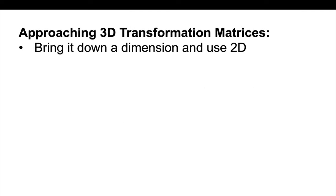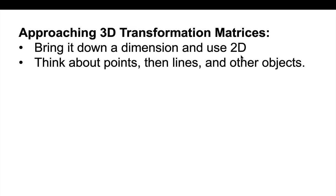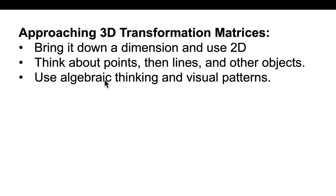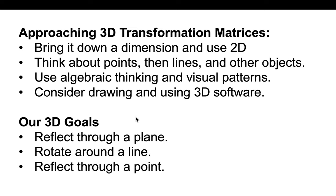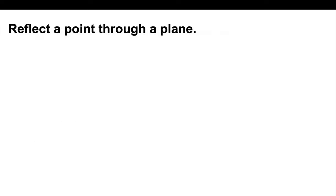When you're working in 3D and get stuck, bring it down a dimension — 2D has a lot to offer. If you're trying to move something complicated like a line or a shape, step back and simplify: try to move a point through a transformation first, then build up lines and other objects. Don't be afraid to generalize from algebraic thinking and simple patterns. If you know something about 2D, look at the pattern and try to bring it up to 3D. We're focusing on reflections through a plane, rotations around a line, and reflections through a point.